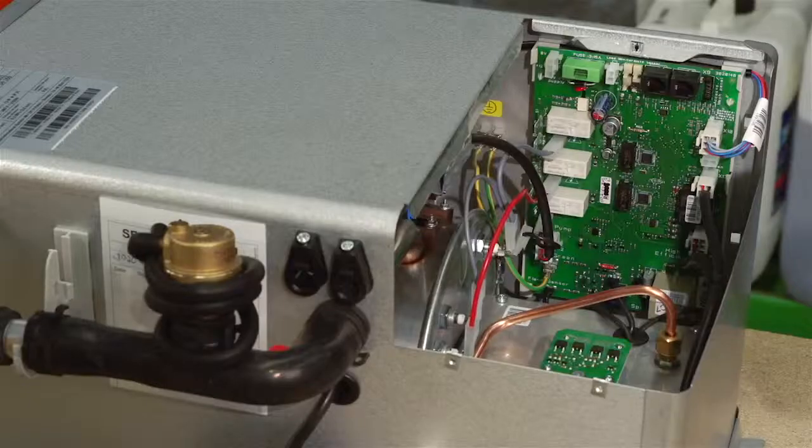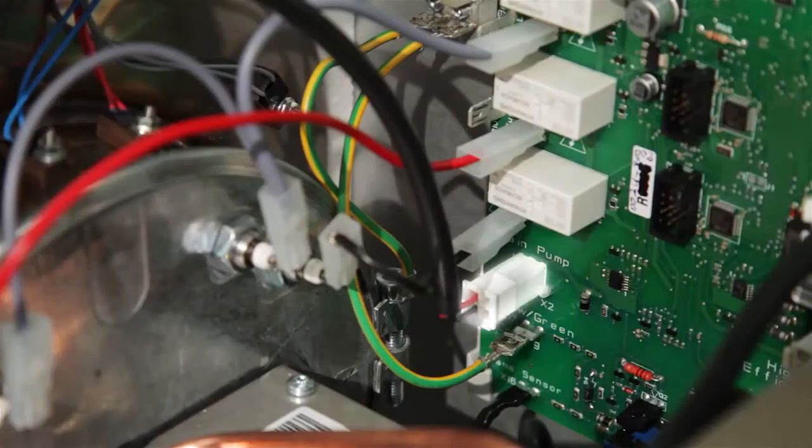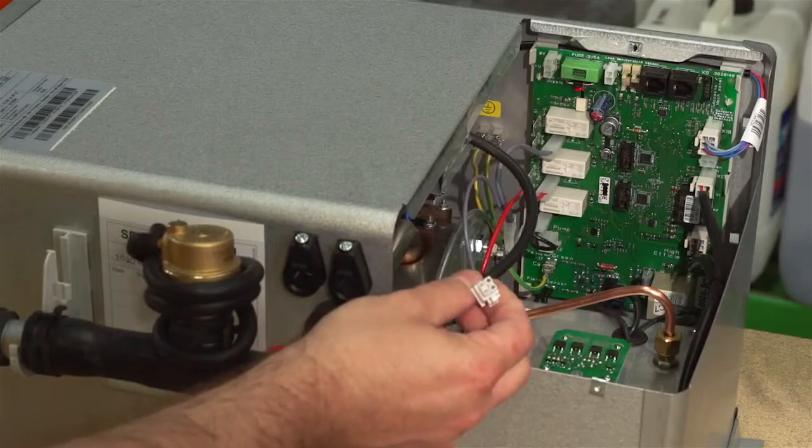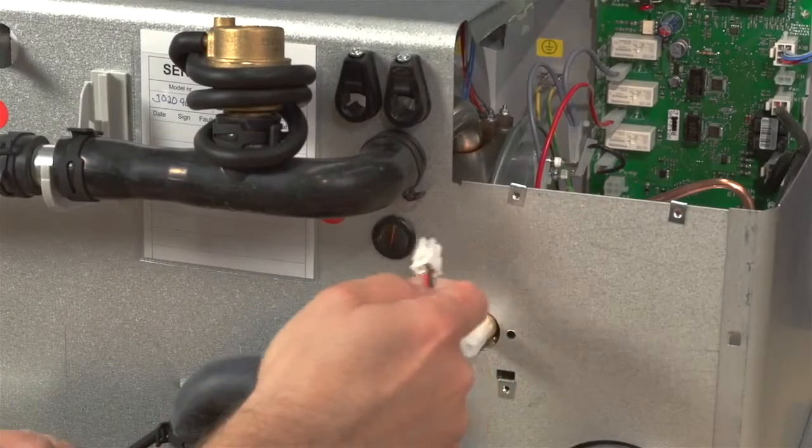The next step is to remove the 12V inline pump connection from the printed circuit board. This is located above the green and yellow earth connection. Once disconnected, remove the plug via the rubber grommet.